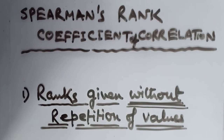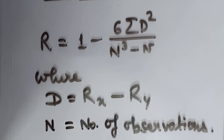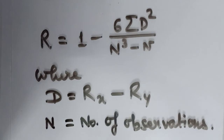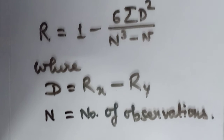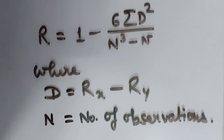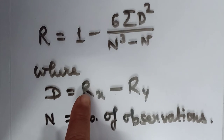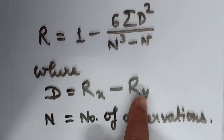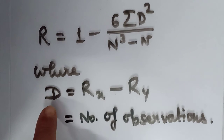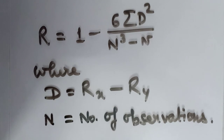In that case, we calculate the rank correlation by the formula r equals 1 minus 6 into summation d squared divided by n cubed minus n, where d equals the difference between the two ranks — that is, the rank given for the x variable minus the rank given for the y variable, so d equals rx minus ry, and n is the number of observations.